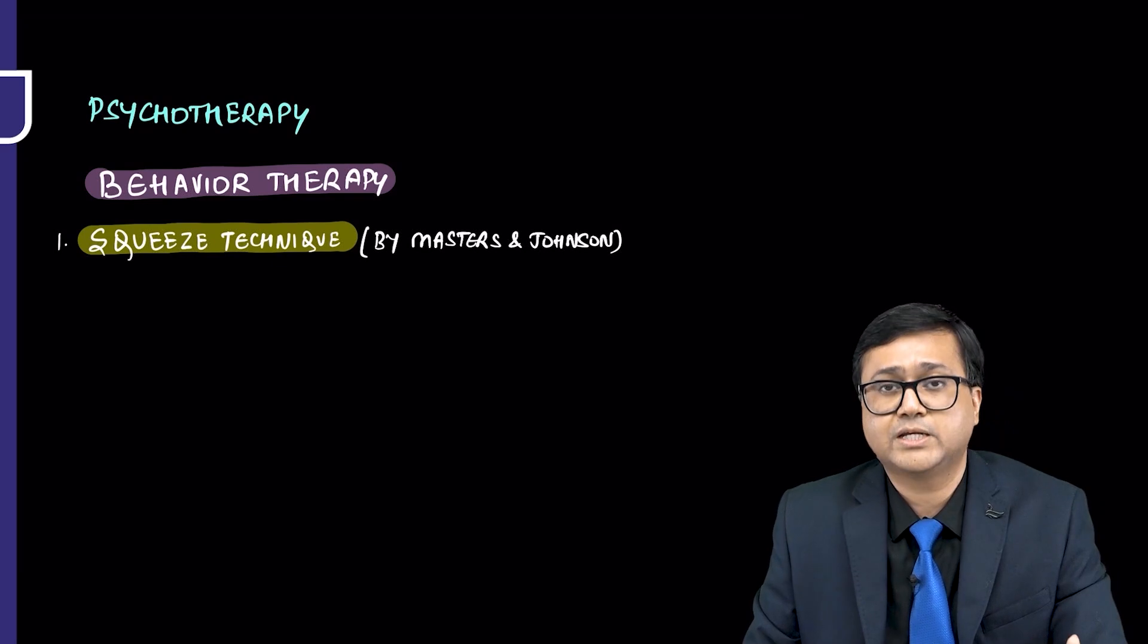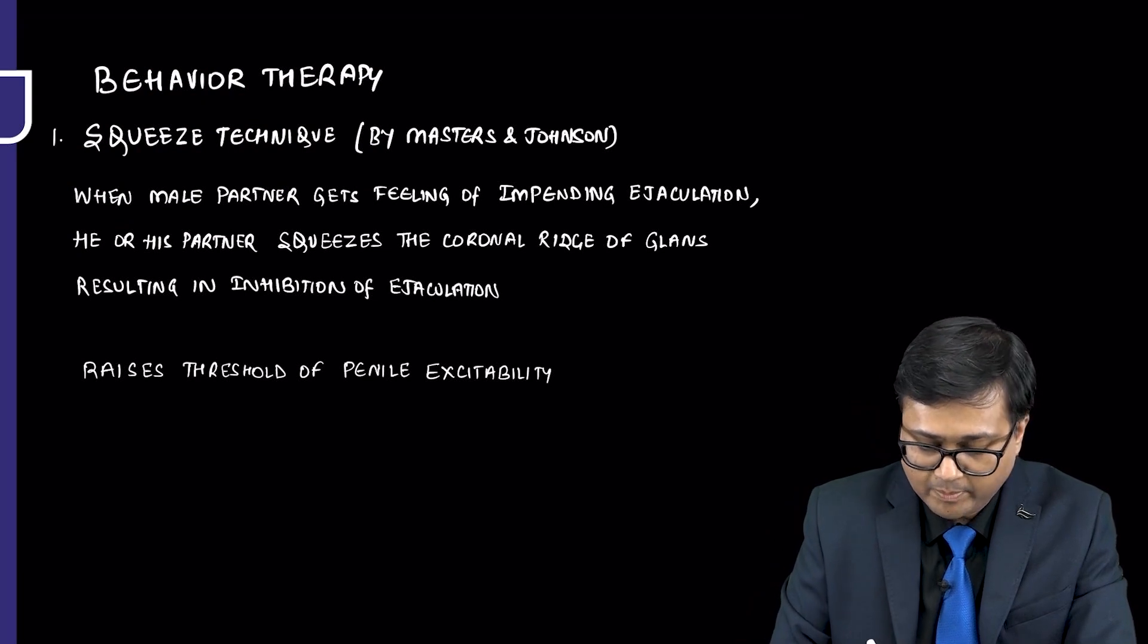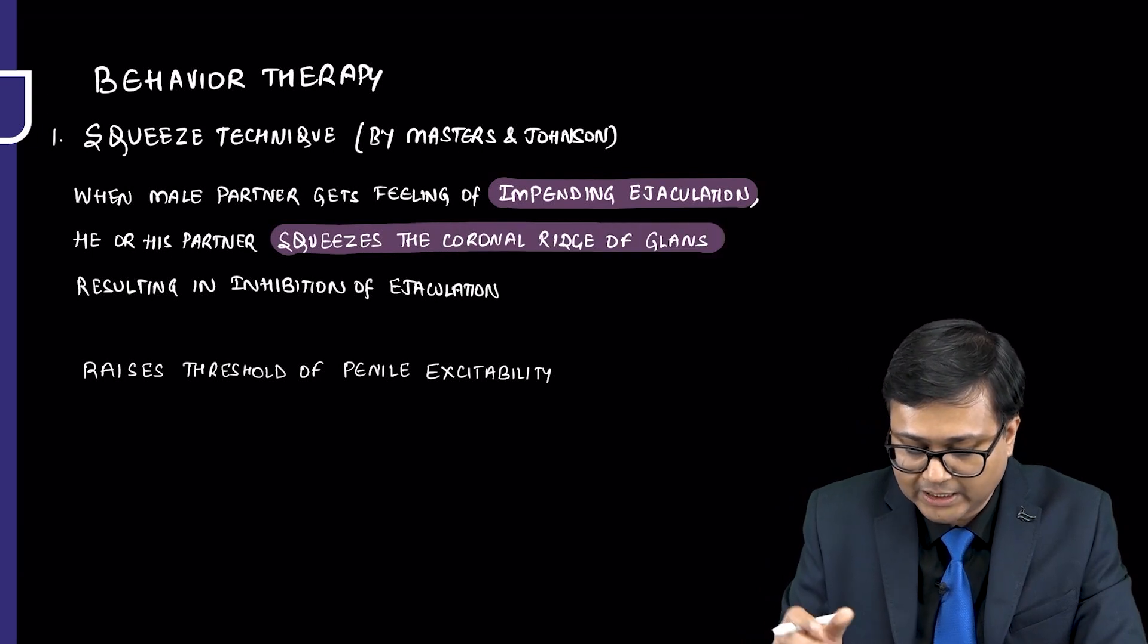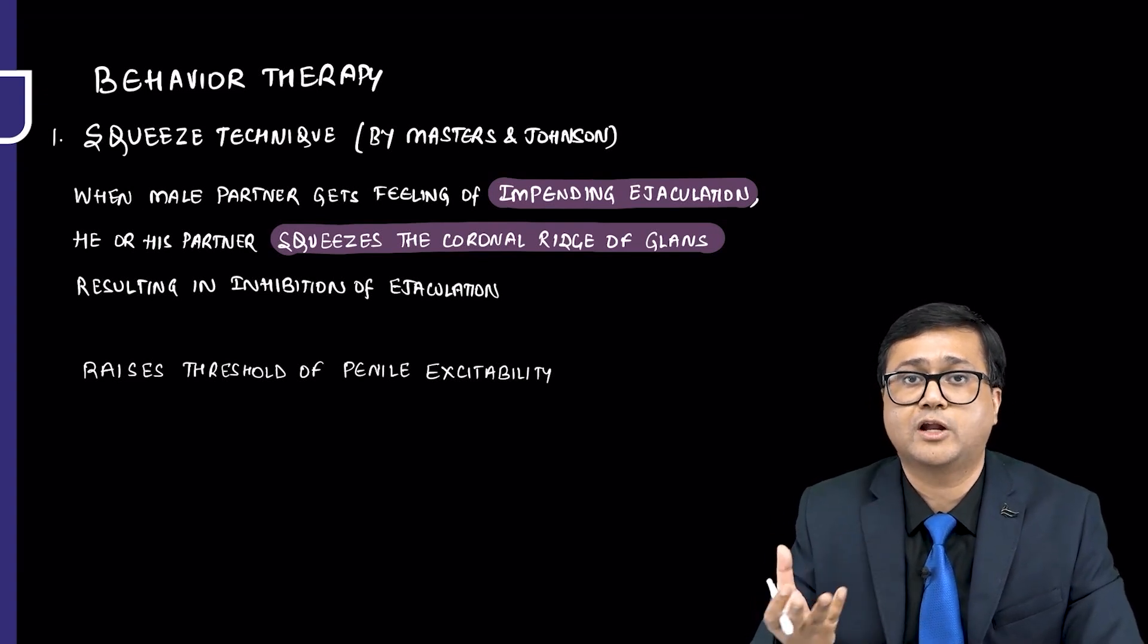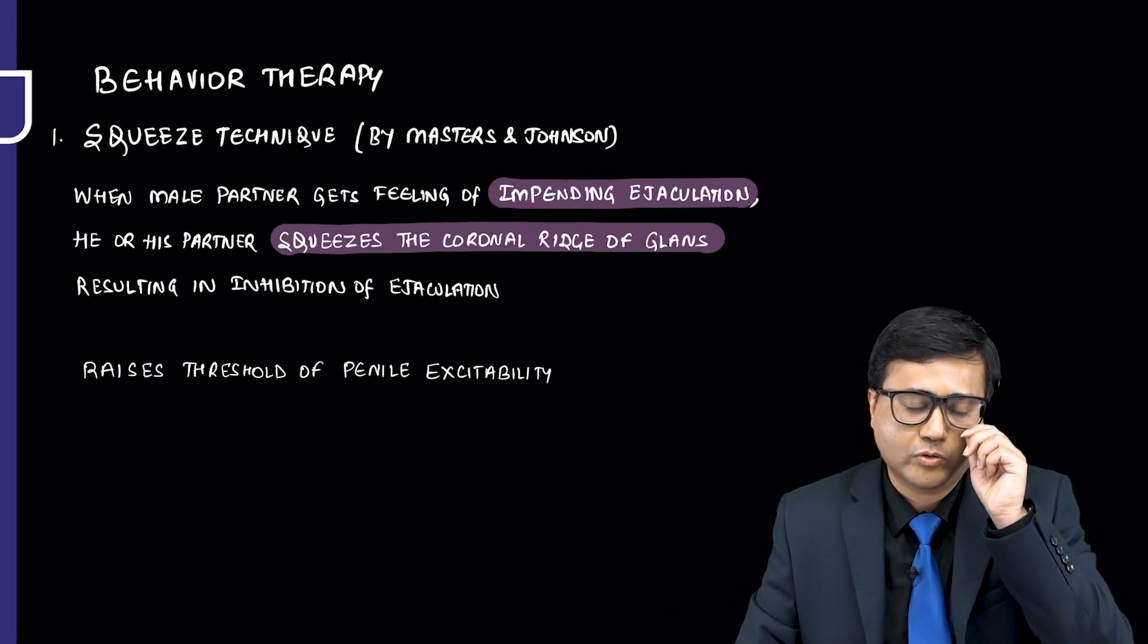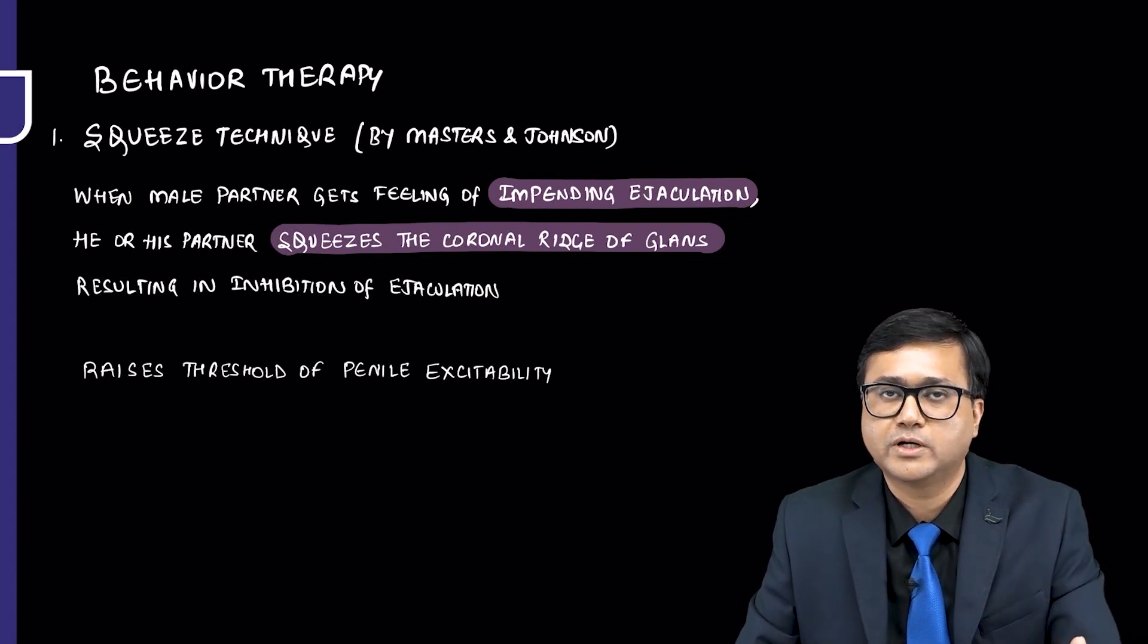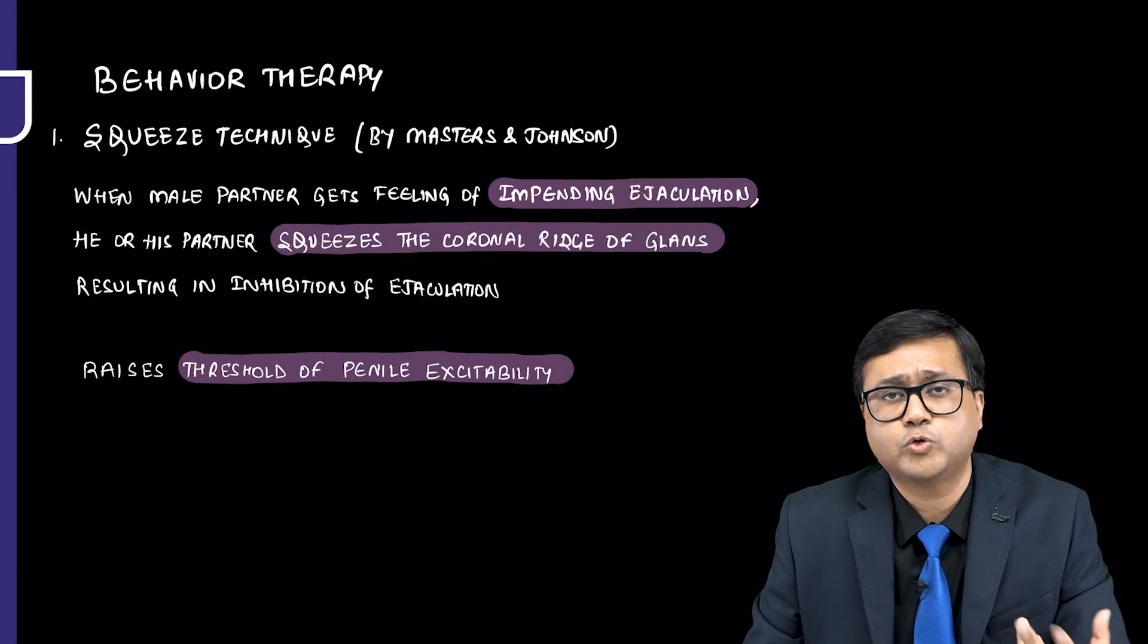Squeeze technique which was given by Masters and Johnson. What happens in the squeeze technique? When the male partner gets feeling of impending ejaculation, when the partner feels that ejaculation is about to occur, he or his partner squeezes the coronal ridge of the glans, resulting in inhibition of ejaculation. Ejaculation subsequently is not allowed. Before ejaculation only it is inhibited. The penis is squeezed. This is squeeze technique. What happens basically? It is done two, three times, and then subsequently in the fourth time, the person is said that he can indulge into complete intercourse. Basically, it raises the threshold for penile excitability. It is one technique which is found to be effective.